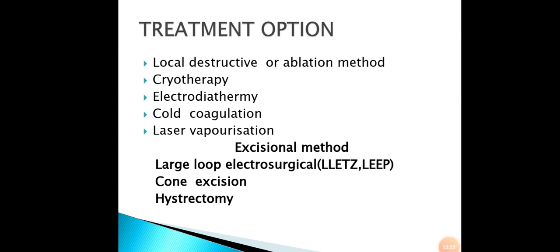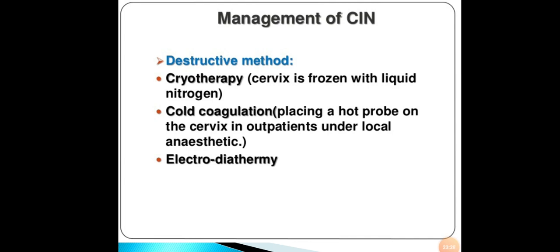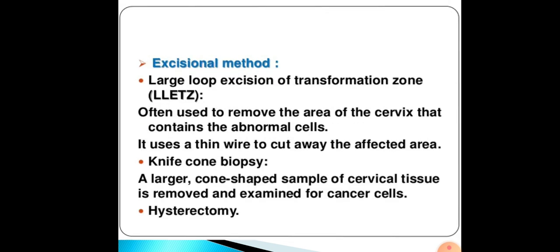Management of CIN: destructive methods include cryotherapy — the cervix is frozen with liquid nitrogen — and cold coagulation, placing a hot probe on the cervix as an outpatient procedure under local anesthesia, and electrodiathermy. Excision methods include large loop excision of the transformation zone using a thin wire to cut away affected area, and knife cone biopsy — where a large cone-shaped sample of cervical tissue is removed and examined for cancer cells.